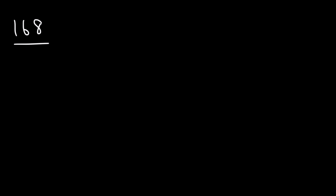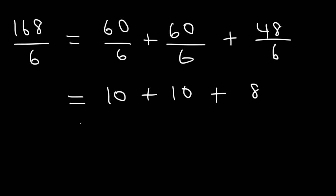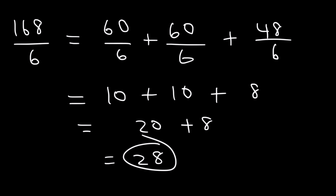This is the final example: 168 divided by 6. 60 is a multiple of 6, so use 60 plus 60 plus 48, which adds up to 168. 60 divided by 6 is 10. 60 divided by 6 is 10. 48 divided by 6 is 8. 10 plus 10 is 20, plus 8 is 28. So 168 divided by 6 is 28. Those are some simple division tricks you can use when dividing a larger number by a one-digit number.